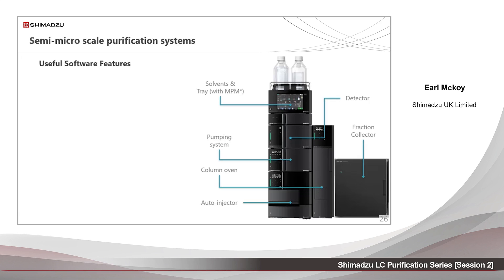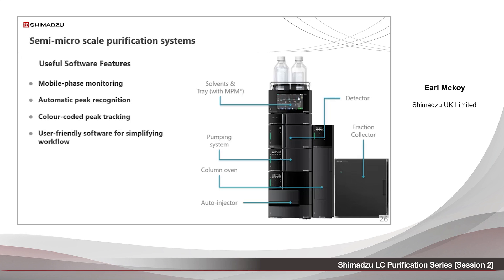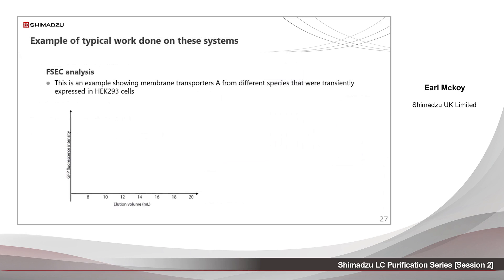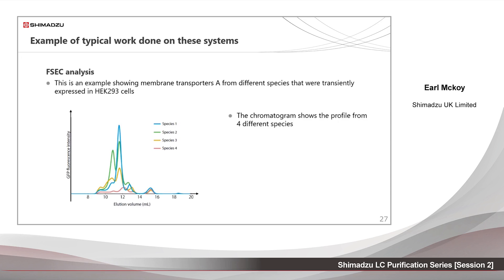Useful software features can be summarised as follows: mobile phase monitoring — useful if the system is in a cold room as all functions can be monitored remotely; automatic peak recognition — making fraction collection easier and consistent; color-coded peak tracking — making identifying peaks post-run easier; and user-friendly software for simplifying workflows. In this example, FSEC — fluorescent size exclusion chromatography — is used to show the profiles of membrane transporters for different species. These and other similar separations are routinely performed on these machines, and if needed, peaks are then collected and identified offline.